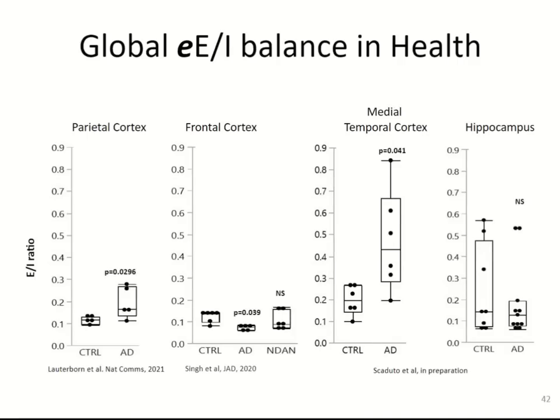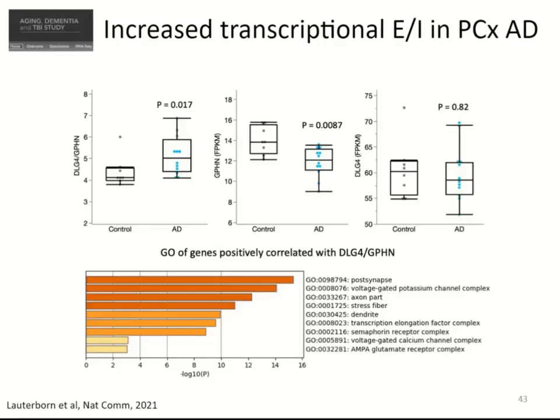When we measured EI ratio in Alzheimer's disease, we see an increase in the parietal cortex as shown before. In the frontal cortex, non-demented individuals with Alzheimer's disease pathology who are cognitively normal showed no difference from controls — Alzheimer's disease was reduced compared to those. In the medial temporal cortex, this is one of the regions where the excitatory-to-inhibitory ratio is highly, highly increased.